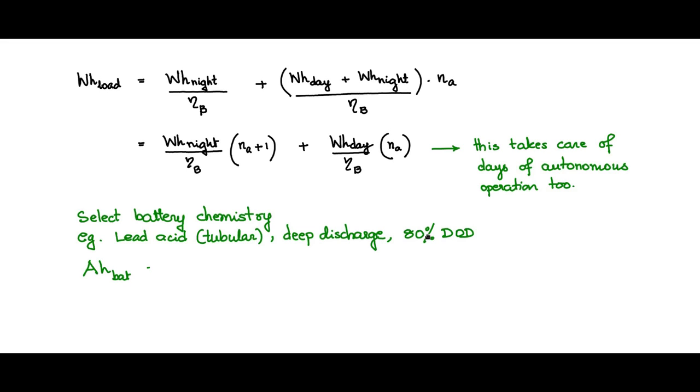The ampere-hour of the battery can be calculated as watt-hour load. This watt-hour load is as calculated here, which includes the efficiency of the battery also, divided by DOD times V battery nominal.